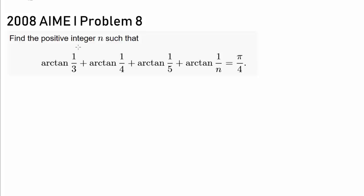Find the positive integer n such that arctan(1/3) + arctan(1/4) + arctan(1/5) + arctan(1/n) = π/4. So there exists a positive integer n such that this evaluates to π/4. That's fascinating on its own, but how do you find it? We know π/4 = arctan(1), so we're adding a bunch of arctangents together and want to get arctan(1).